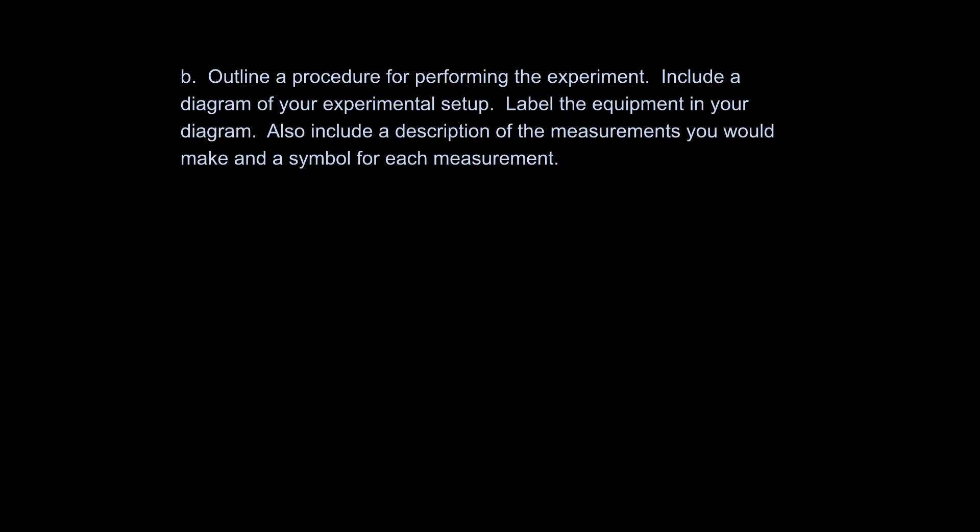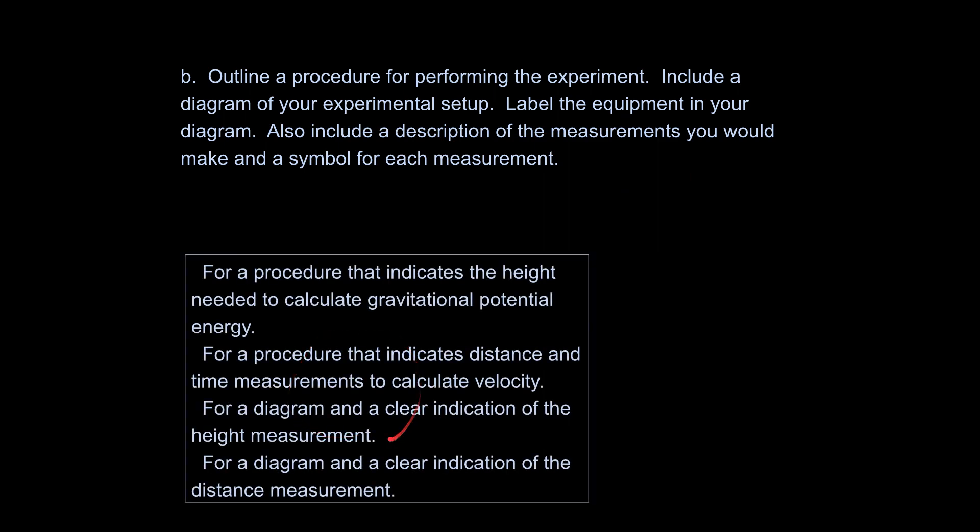So they're asking you for this question initially to get you to think about it, but I think you should partially complete it now, do the rest of the problem, come back and complete the rest after you decide exactly what you're going to do for your procedure. And so part B says outline a procedure for performing the experiment, include a diagram, label the equipment, include a description of the measurements you would make and a symbol for each measurement. So here is our grading key for this. There are four points we can get for this.